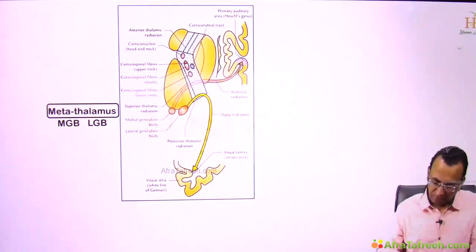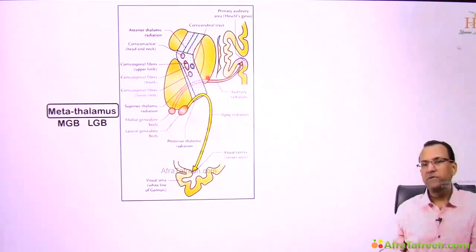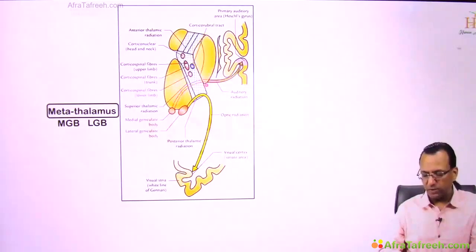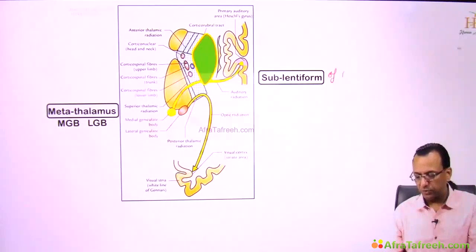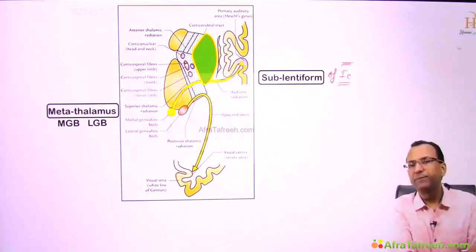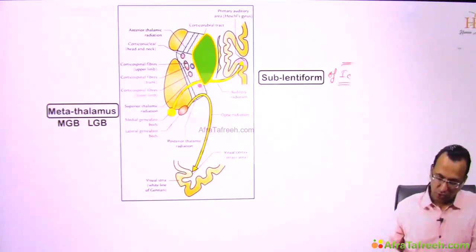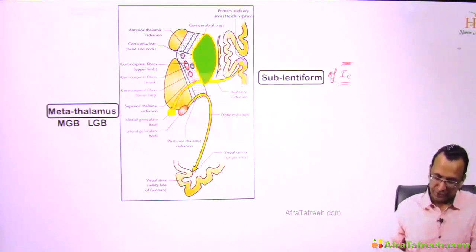The sublentiform fibers pass under the lentiform nucleus — that is why they are called sublentiform fibers. They use the posterior part of the internal capsule to carry auditory information.